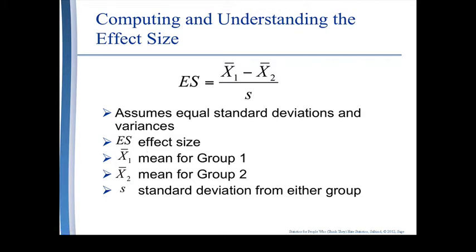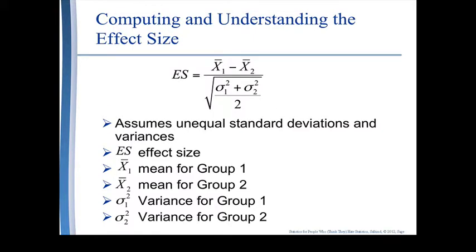The formula for calculating an effect size, assuming the standard deviations and variance are equal, is fairly easy. In Excel, we know how to do averages and standard deviations. It becomes as simple as writing a formula: the effect size equals the mean of the first sample minus the mean of the second sample, divided by the standard deviation of either sample — it doesn't matter which, since we assumed equal variance. When we cannot assume equal variances, the calculation becomes a bit more complex, but it's not outside what we can do in Excel.